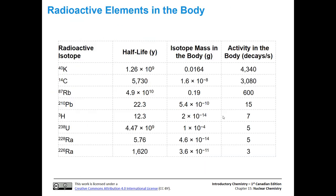There are radioactive elements in our bodies. The radioactive isotopes present include potassium-40, carbon-14 — with a decent number of decays per second happening inside you right now — rubidium-87, and several others that contribute a very small, trivial number of decays per second.